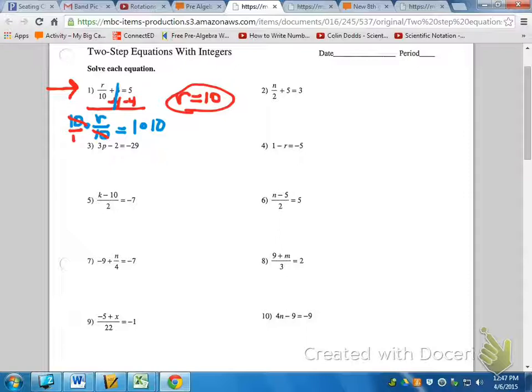We're going to skip down now and do number 3. So on your paper, write 3P minus 2 equals negative 29.